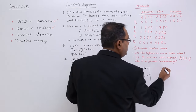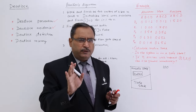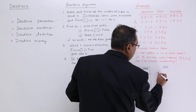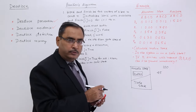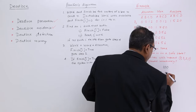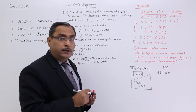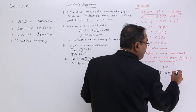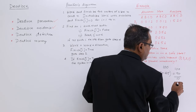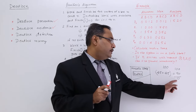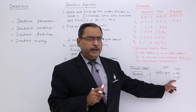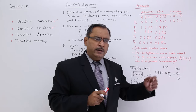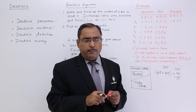Let us suppose there is a bank having 100 bucks. Myself has gone to this bank to draw 45 bucks, and another friend of mine has gone to the bank to draw 45 bucks. So we are withdrawing 90 bucks from the bank, and how much will be remaining with the bank? That will be 10 bucks. Now, the probability is very high that another person will come demanding or withdrawing more than 10 bucks from their account. In that case, the bank cannot give the money.